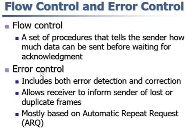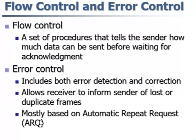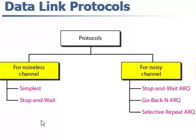Next, error control. It includes error detection and correction. It allows the receiver to send information about lost and duplicate frames. This uses an automatic repeat request (ARQ), which tells how many times the sender has to repeat sending — if a frame is lost, a frame acknowledgement is lost, or an acknowledgement is delayed.